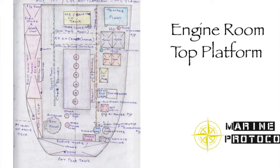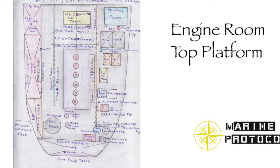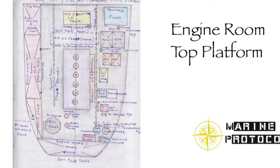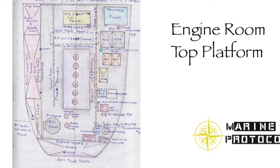This section will explain some of the paraphernalia found at the top platform. What is an incinerator? Burning of waste oil, sludge, and cotton waste is carried out using the incinerator.